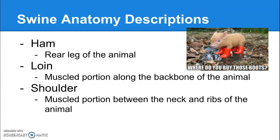The round is essentially the thigh on a cow. The thigh on a pig is the ham, so it's kind of the muscular portion of the rear leg of a pig. The loin is exactly the same as it is in the cow — it's that muscled portion along the backbone of the animal that gives us really juicy, delicious meat.